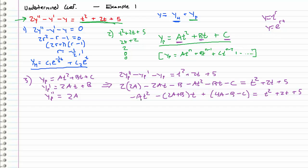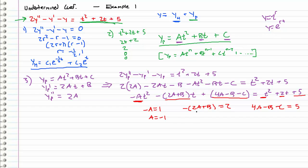Now we're ready to solve for a, b, and c by equating coefficients. For t squared: negative a equals 1, so a equals negative 1. For t: negative 2a plus b equals 2, substituting a gives b equals 0. For the constant: 4a minus b minus c equals 5, which gives negative 4 minus c equals 5, so c equals negative 9. This gives us our particular solution yp equals negative t squared minus 9.